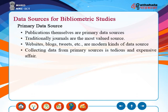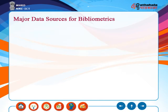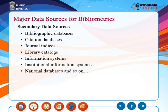Collecting data for bibliometric studies directly from publications is a next-to-impossible task for individual researchers. Hence, one has to depend upon a good source from where the raw data could be culled out. The decision about the data source goes a long way in determining the output of the study. Data sources for bibliometrics include bibliographic databases, citation databases, journal indices, library catalogues, information systems, institutional information systems, and national databases.